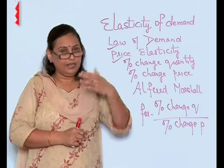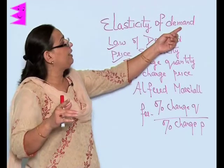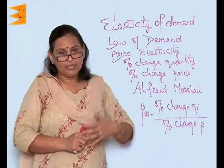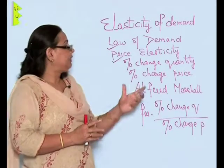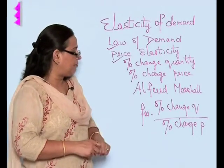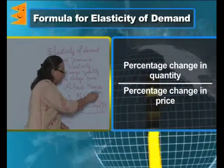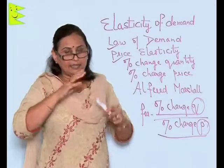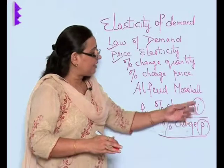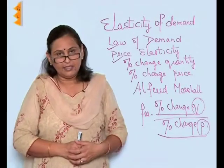It cannot happen that if there is an increase of 2 rupees or an increase of 100 rupees, the demand will increase or decrease at the same proportionate. So this elasticity of demand is going to tell us how demand fluctuates with the change in price. The formula of elasticity of demand is percentage change of quantity upon the percentage change of price. Thus, we are going to have an interesting study of elasticity of demand.